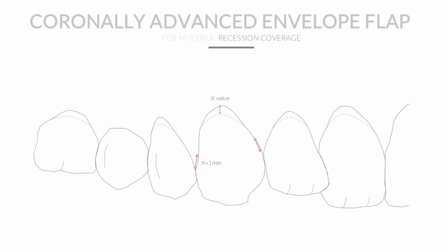The oblique incision is made starting from the apical margin of the adjacent teeth and ends at the previously determined end point. Once we complete this step, we have created apically to the incision a couple of surgical papilla. The remaining papillary tissue coronally to the incision is now called an anatomical papilla.